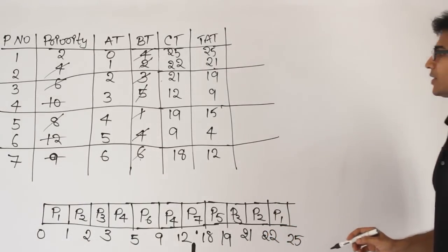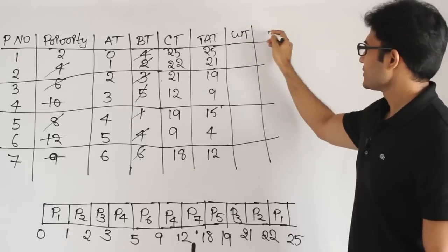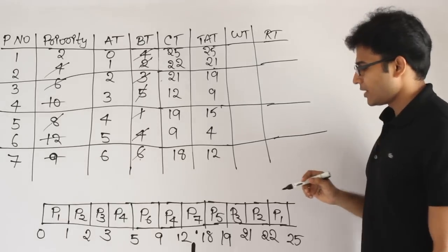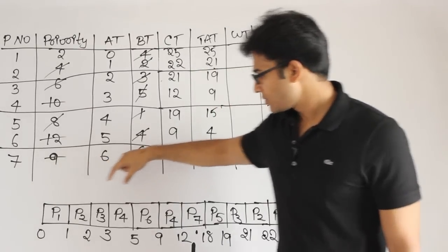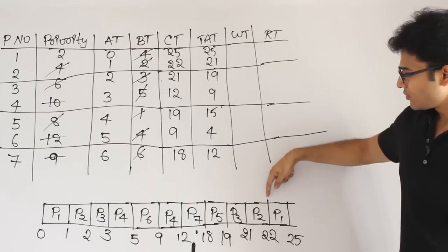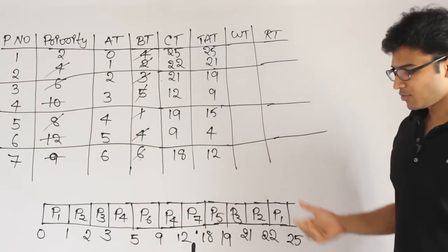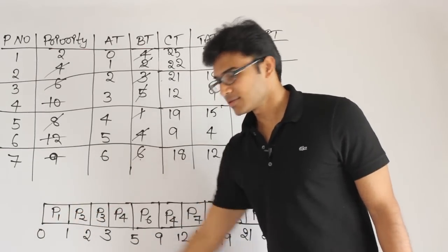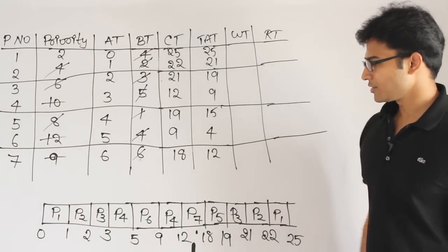After finding turnaround time, we can find waiting time and response time. In this preemptive case, response time and waiting time will be different. For example, P1 got scheduled at multiple points, so P1 is waiting for the entire duration between executions — waiting time is more. But response time is less, because response time is the point at which the process gets scheduled for the first time. Waiting time depends on the entire duration.